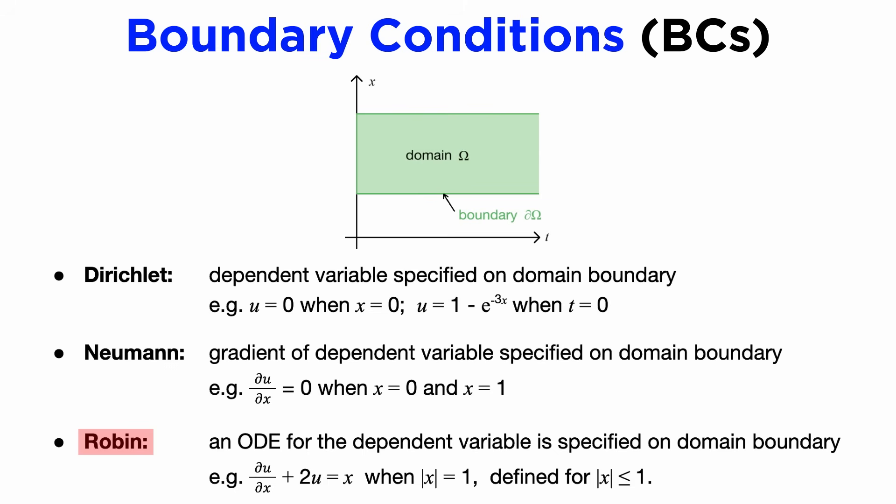The third is the Robin type, which is sort of like a combination of the other two, where we specify an ordinary differential equation that the solution u must satisfy on a certain set of points, typically chosen to be the boundary of the domain of our solution u.